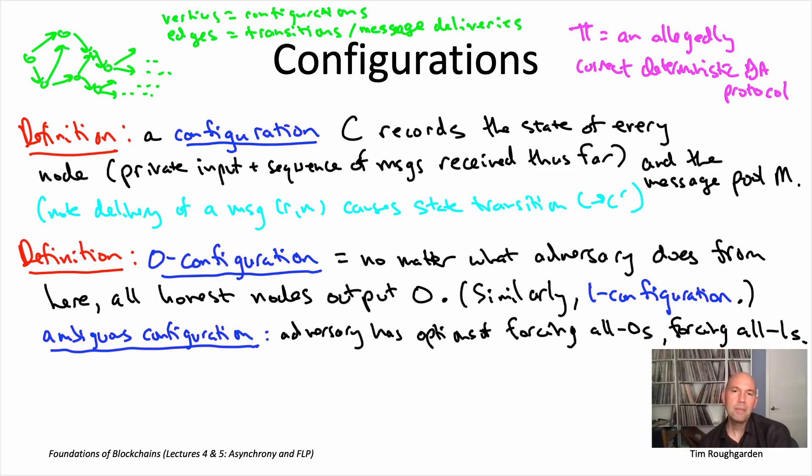And again, by virtue of π satisfying agreement, every one of the configurations can be classified in this way. So, if there's no adversary strategy that forces one, it's a zero configuration. If there's no adversary strategy that forces zeros, it's a one configuration. And if the adversary still can hedge its bets and sort of put off to the future whether or not the output's going to be all zeros or all ones, then it's an ambiguous configuration. No other possibilities, because all the honest nodes always output the same thing, by agreement.